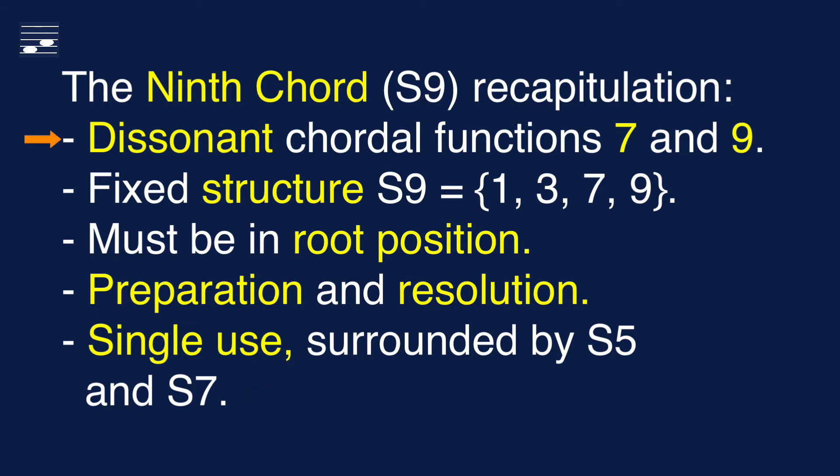The 9th chord has two dissonant chordal functions, 7 and 9. It has a fixed four-part structure and consists of the root 1, 3, 7 and 9. It must be used in root position with chordal function 1 in the bass. The dissonant functions must be properly prepared and resolved. And finally, in a diatonic harmony context we may use only isolated single 9th chords.